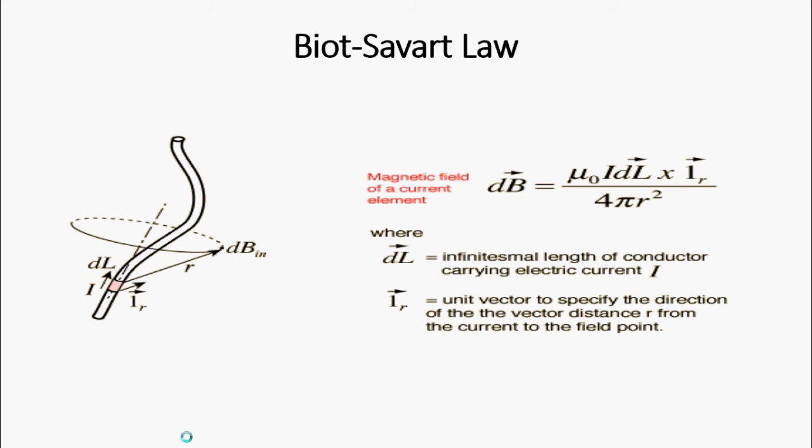The law is valid in the magnetostatic approximation and is consistent with both Ampere's law and Gauss's law for magnetism. It is named after Jean-Baptiste Biot and Felix Savart, who discovered this relationship in 1820.